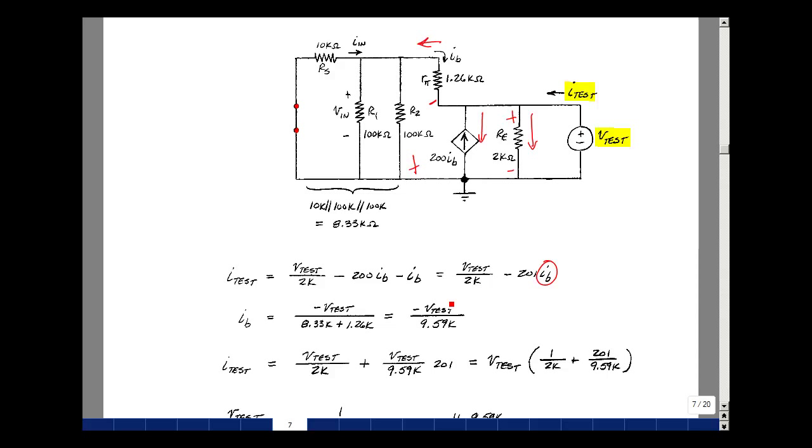So I_test is equal to V_test over 2k, and then a minus times a minus V_test over 9.59k, so here's my value then as a plus times 201. You can pull out the V_test, and I have 1 over 2k, and then 201 divided by 9.59k.